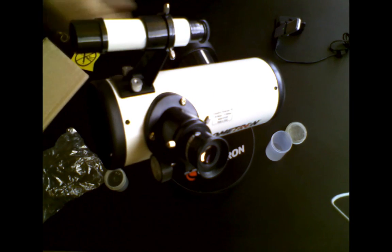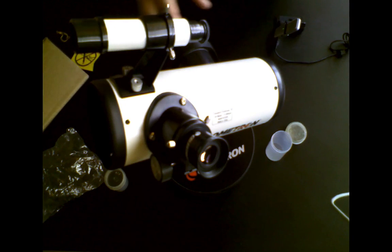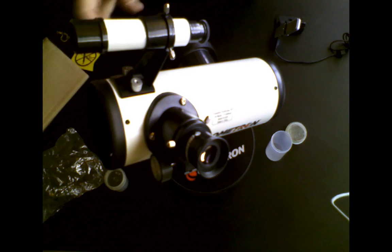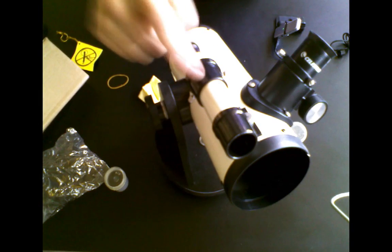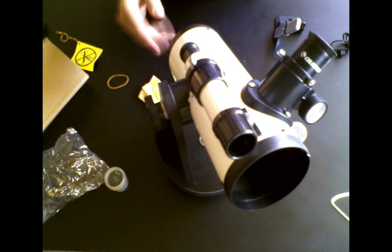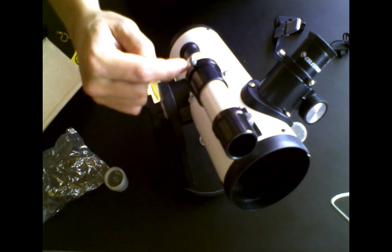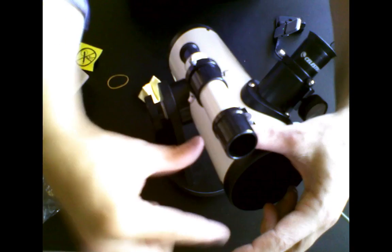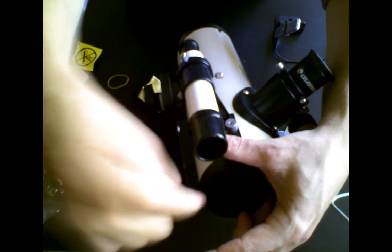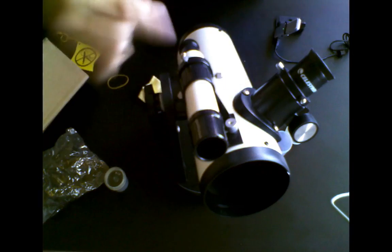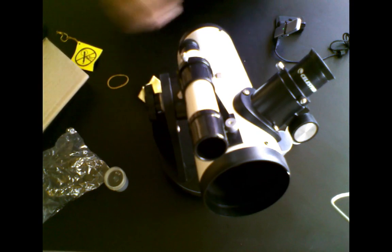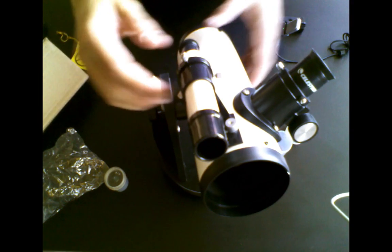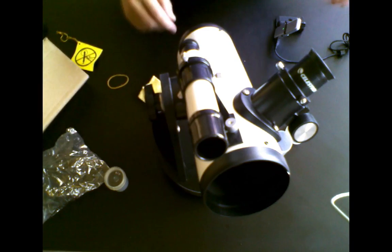So the first thing that you need to do in order to actually do something with this is, let's say you want to find a target. Use the finder first. This is the lowest magnification, which means you're going to see the widest amount of space, and your target's going to be somewhere in there. And what you want to do is, once you find your target, you move until your target is right in the middle of this. Less magnification, but wide field of view, so it's pretty easy to find your target.